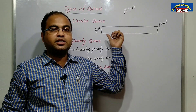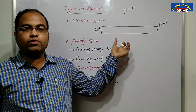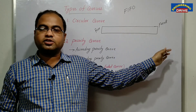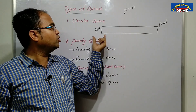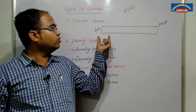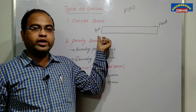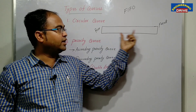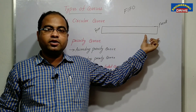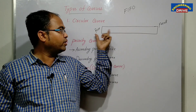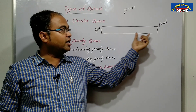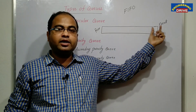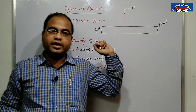The element which is inserted first in the queue will be out first from the queue. As we know, in a queue we have two ends: one is rear, another one is front. From the rear end, elements are inserted, and from the front end, elements are deleted.